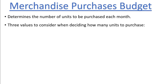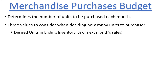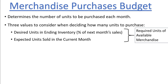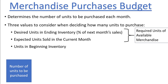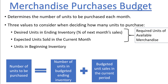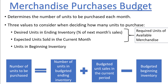First, they should consider how many units they want to have in ending inventory, which is usually based on some percentage of the projected unit sales in the next month. Second, they should consider how many units of product they expect to sell in the current month. These first two quantities together represent the number of units that the company needs for the month, often called the required units of available merchandise. Finally, they should consider how many units they already have in beginning inventory — the more units in beginning inventory, the less will need to be purchased in the current month. Putting everything together, the formula is: units to be purchased equals budgeted ending inventory plus budgeted unit sales in the current period minus budgeted beginning inventory.